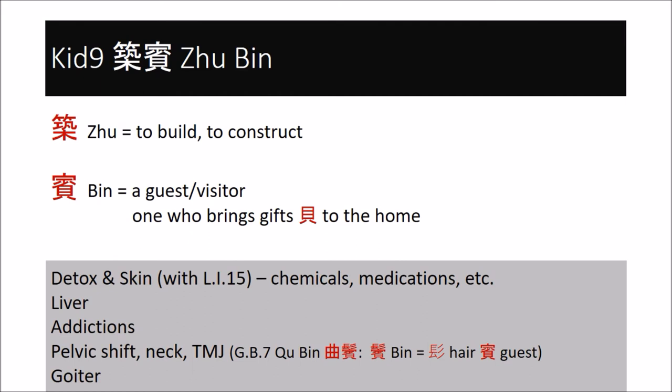Kidney nine, Zhubin, the guest house, represents how we construct our own house so that we can be good guests in it, and by extension how we let go of unwanted guests like demons, addictions, etc. It is of course the start of the yin wei channel, the channel that represents how we link our lives and which homes to the heart. Physically, being at the base of the gastrocnemius, it is the support of our posture, of our construction. Kidney nine is a point used for any kind of addictions, and it is also a detox point physically together with large intestine 15. This combination is used for the detoxification of the liver. Kidney nine affects the liver as well as the physical kidneys. Kidney nine and large intestine 15 is also a major combination for all skin issues.